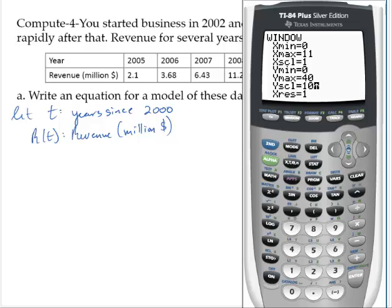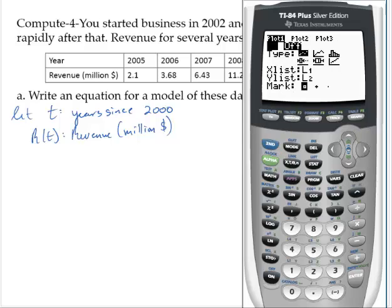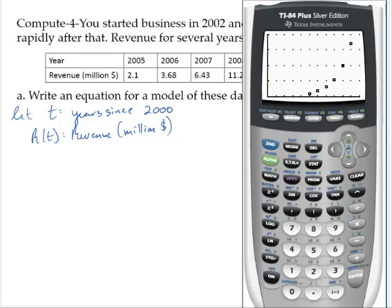Let's turn the stat plot on and let's look at the graph. And I have a grid on as well. And so what I see here is I see a rapid growth. And if I look at that, it looks to me like an exponential function. So let's use an exponential model.